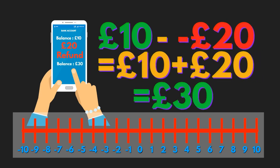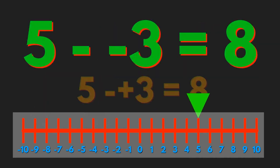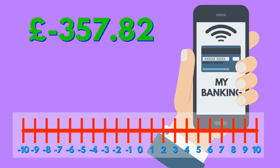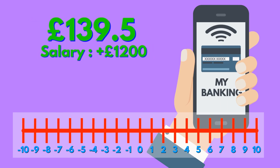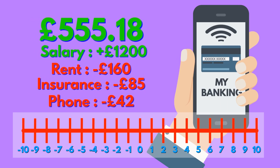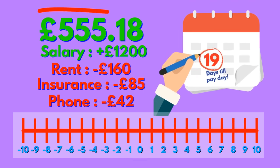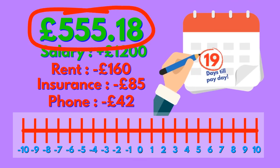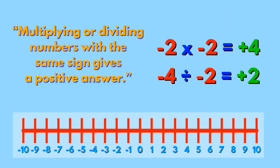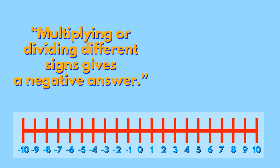What about if you had a bank balance of minus £357.82 and your employer puts your pay of £1,200 in? Your rent, insurance, and phone bills come out. How much would you have left per day until the next payday without going into your overdraft? When you multiply or divide two numbers with the same sign, the answer is always positive. When you multiply or divide numbers with opposite signs, the answer is always negative.